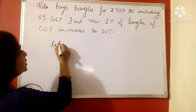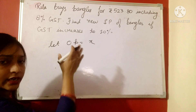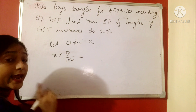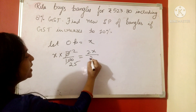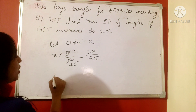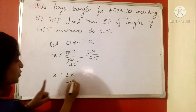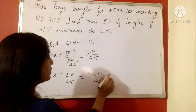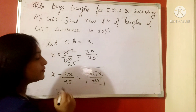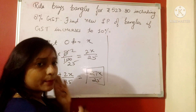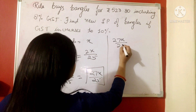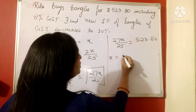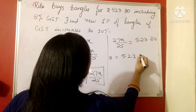Let the original price be x, as we did in the previous question. On that x we have applied GST of 8 percent, which will be 2x by 25. So x plus 2x by 25 — original amount plus GST — becomes 27x by 25. Now this 27x by 25 is the amount including GST and it is equal to 523.80, from where we will find the value of x.